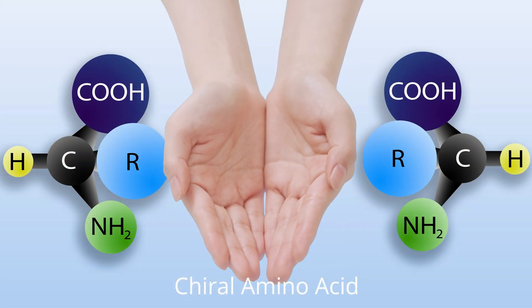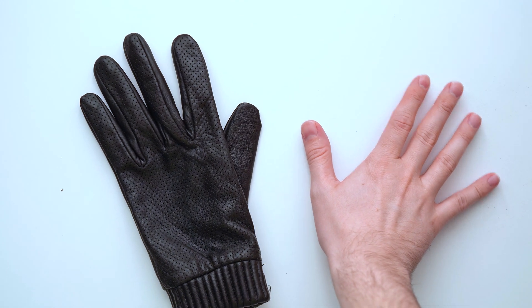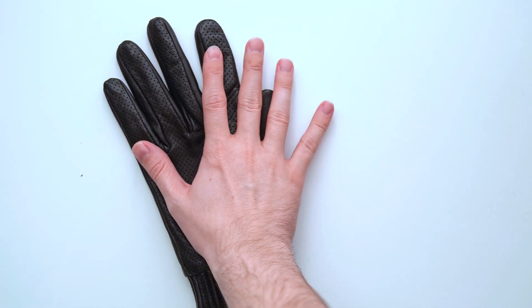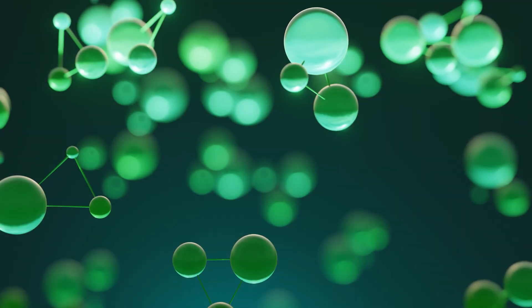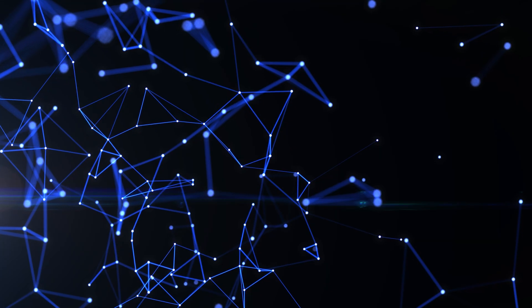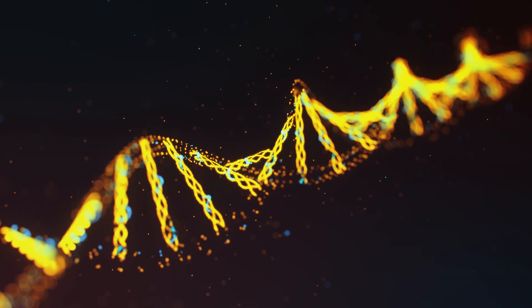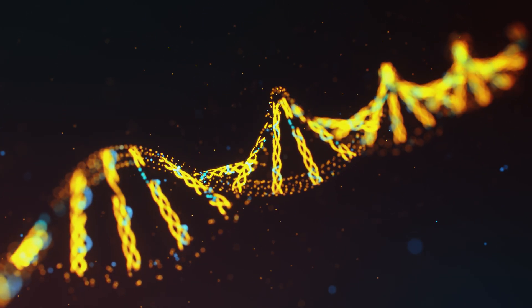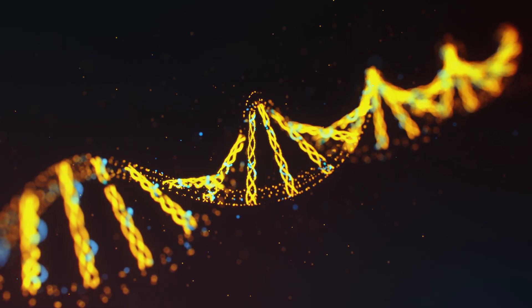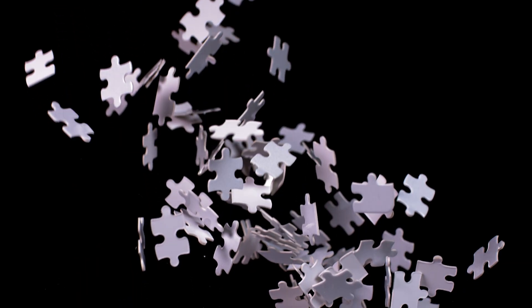Chirality is simply the property of having a handedness, like a left glove that just won't fit a right hand. If a molecule is chiral, its mirror image is distinct — you can't rotate or flip it in 3D space to make the two forms overlap perfectly. In biology, this matters a great deal. Enzymes, viruses, and antibodies often rely on a precise shape to bind with target molecules. Think of it as matching puzzle pieces; reverse that shape, and suddenly the puzzle pieces no longer connect.